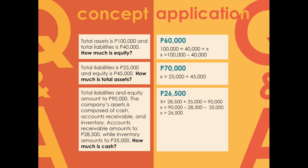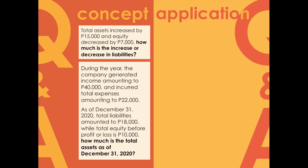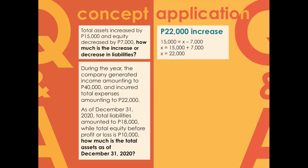Problem four: total assets increased by 15,000 and equity decreased by 7,000 — by how much did liabilities increase or decrease during the period? This time we are given the amount of movements during the period. Assets is represented by plus 15,000. This equals x (liabilities) minus 7,000 since there was a decrease in equity. Solving for x, we get an increase of 22,000 pesos in liabilities.